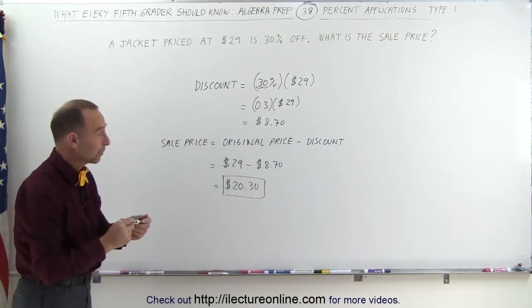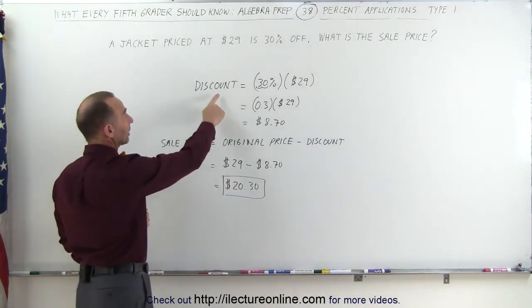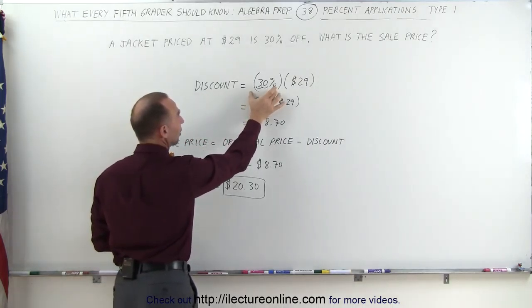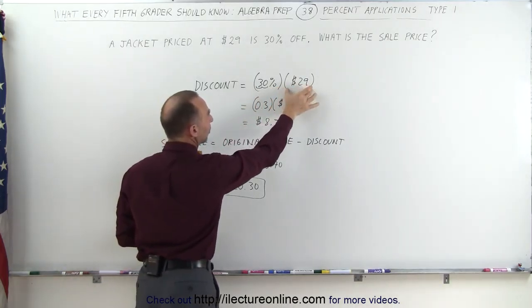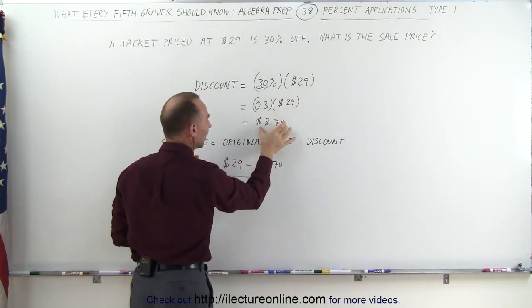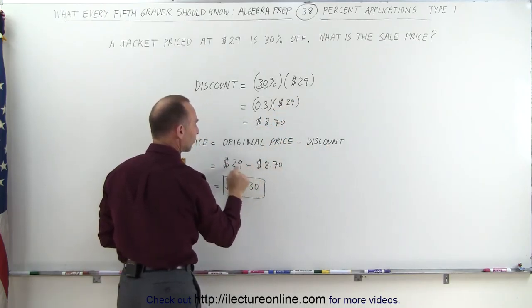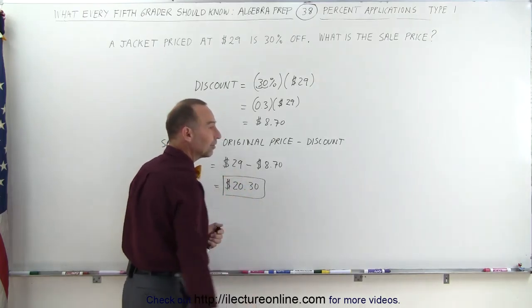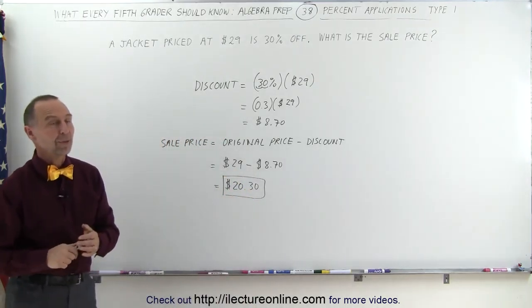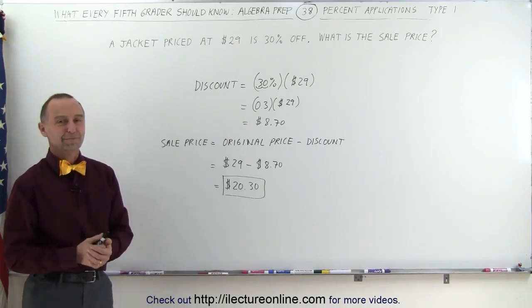And that's how we do that. So again you first calculate the discount which is you multiply the percentage that's off times the original price to get the discount. Then we subtract the discount from the original price. $8.70 subtracted from $29 and we get the sale price. And that's how we apply the percentage problem on type number one.